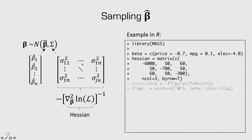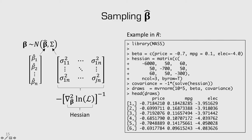We compute the covariance matrix by taking the negative inverse of the Hessian — in R you use the solve function to invert a matrix. Then we can take 10,000 draws from that multivariate distribution using the MVRNorm function from the mass library, which takes a vector of means and a covariance matrix. Looking at the first six rows of the draws, we can see that for price — where the mean estimate is negative 0.7 — the draws are all clustered around that value, and the same is true for MPG and ELEC.